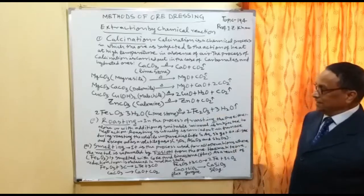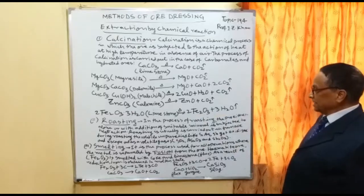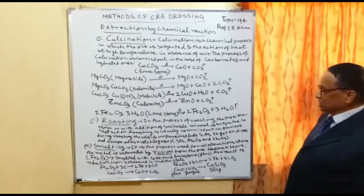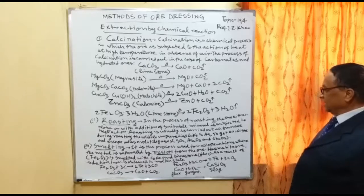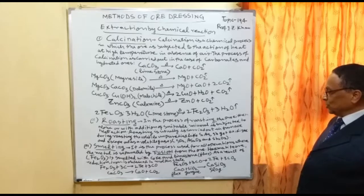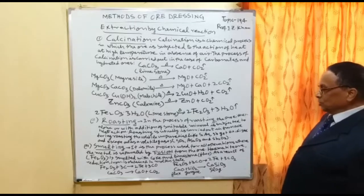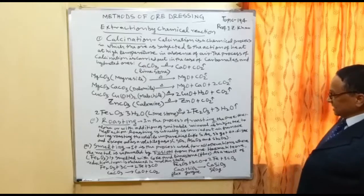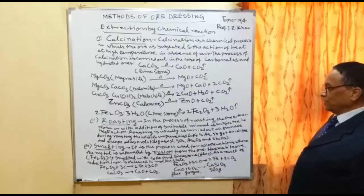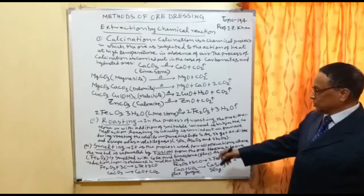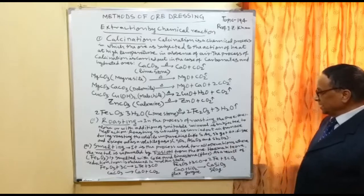Number two is roasting. In the process of roasting, the ore — either alone or with the addition of a suitable mineral — is subjected to heat action. Roasting is usually carried out in a furnace. During roasting, volatile impurities like sulfur, arsenic (As), and antimony (Sb) are converted into oxide gases and evaporated as SO2, As2O3, and Sb2O3.